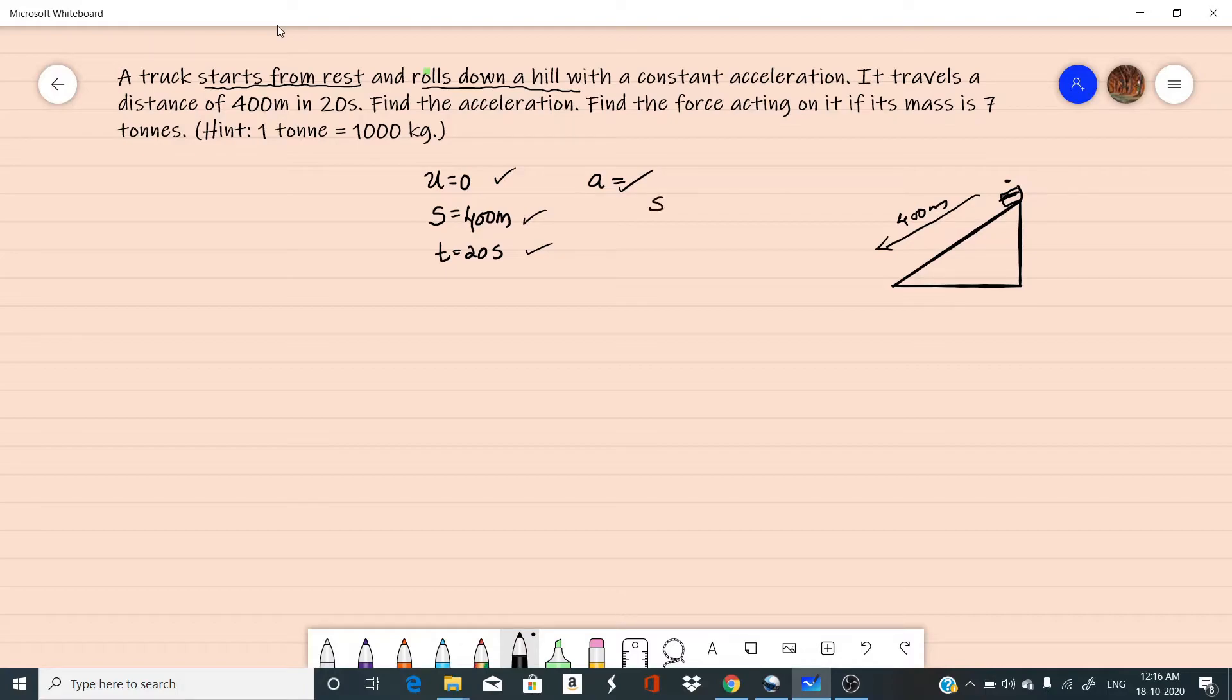We know S is equal to UT plus half AT square. Here S is given, U is given, T is given, and we have to find A. So S is 400 equal to U times T, U is zero, so zero into T is zero, then plus half into A into T square, that is 20 square. Then 400 equal to half A into 20 square, that is 400.